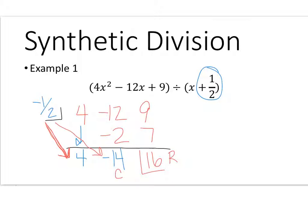And then this is your constant and this is just x. So your answer is 4x minus 14. And just like in long division, I'm going to do my remainder over the divisor.